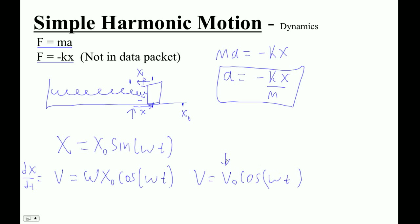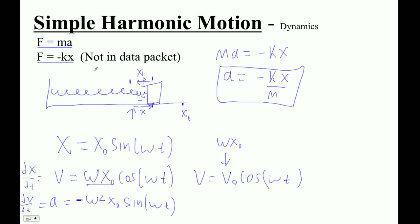The formula they give you in the data packet is v equals v-naught cosine omega t. But we know v-naught is omega x-naught — that's why it is, because it's all just calculus. If I take the derivative again, dv/dt is acceleration of course. The derivative of cosine is negative sine, and the omega comes out again, so you get omega squared. So acceleration is negative omega squared x-naught sine omega t. I showed you this on the first day — the acceleration is the negative of the displacement, because if our displacement is to the right, the force is actually to the left.